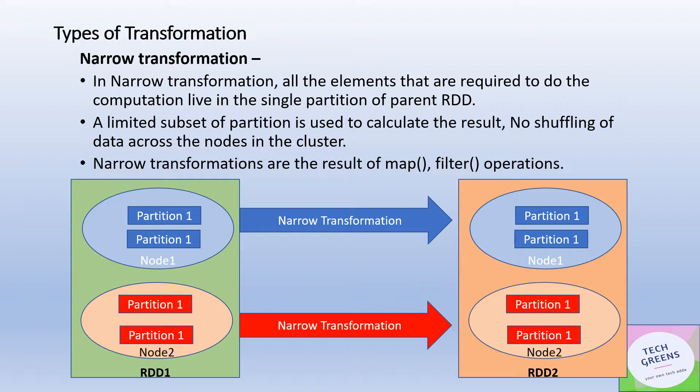Whenever you're doing any kind of computation on that data, it is applied on the same partitions, so there is no need to move the data across the nodes. This way we save ourselves from a lot of shuffling, and shuffling is an expensive operation in a distributed system. Some examples are map and filter.